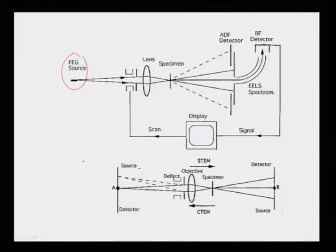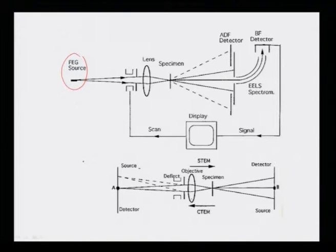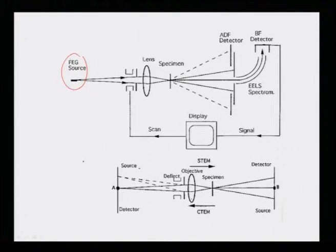One can use different detectors below the specimen to obtain images using either the transmitted or diffracted beams. The beam is scanned over the sample by a deflector — similar to a scanning electron microscope — and falls on the objective lens, which focuses and demagnifies it to a very small convergent beam on the specimen, producing different kinds of information.